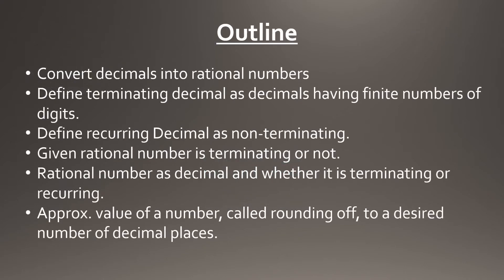In this chapter, we have to learn decimals and convert them into rational numbers. As we learned in the last chapter, numbers can be in the form of fractions and decimal numbers, which have a decimal point. In decimals, we have terminating, recurring, and non-terminating types, and we will define each of these.